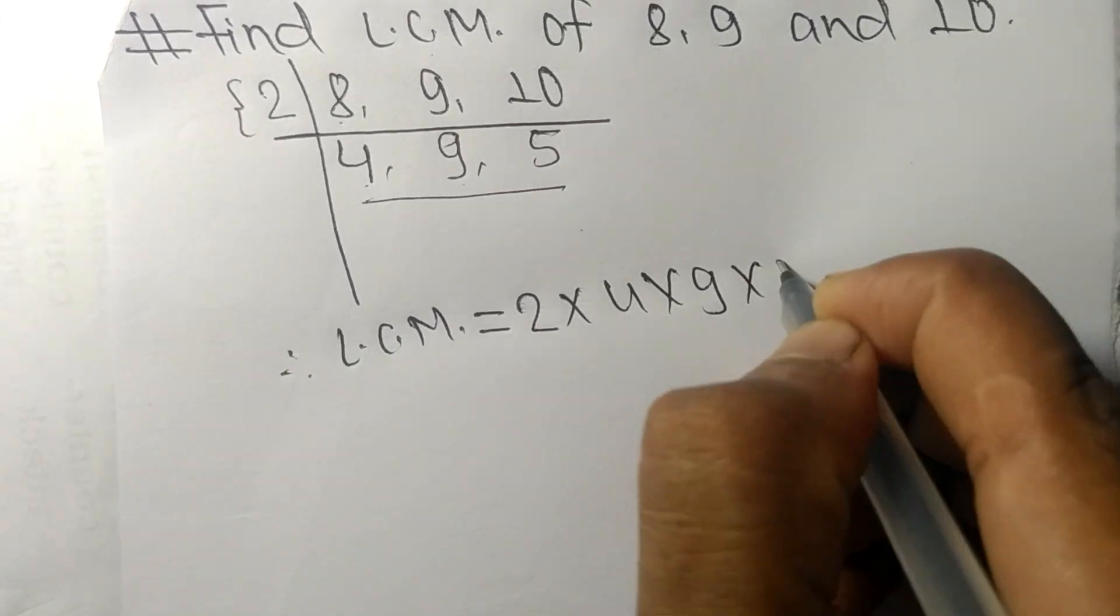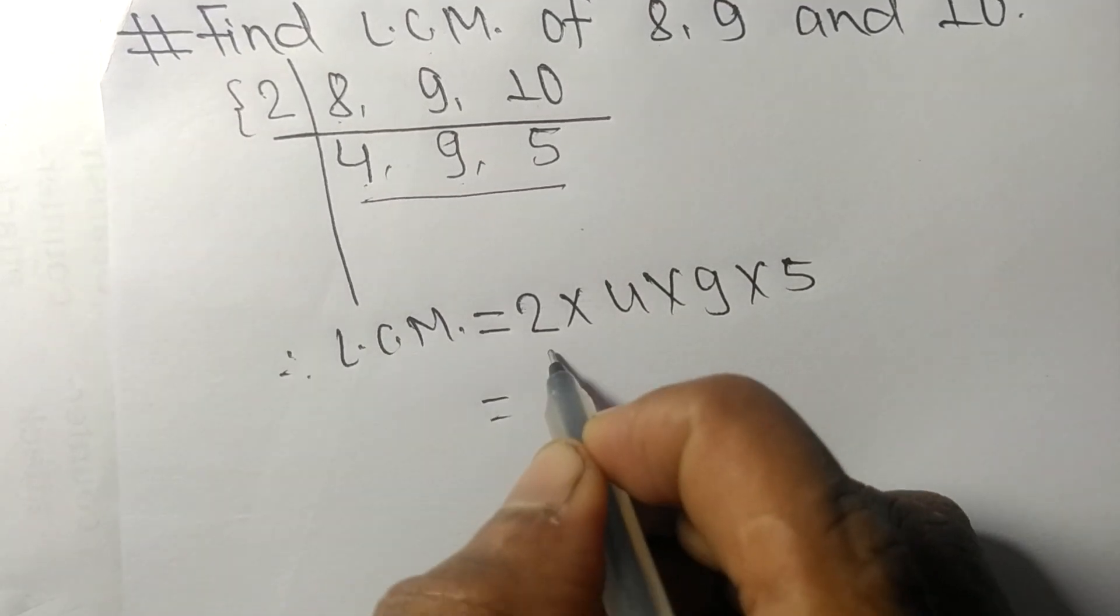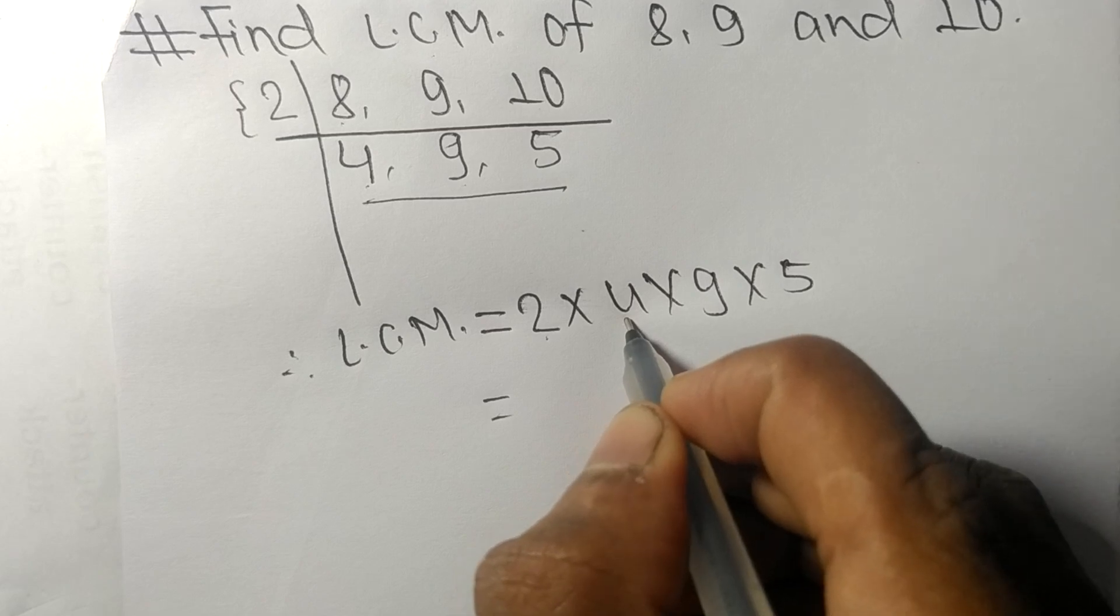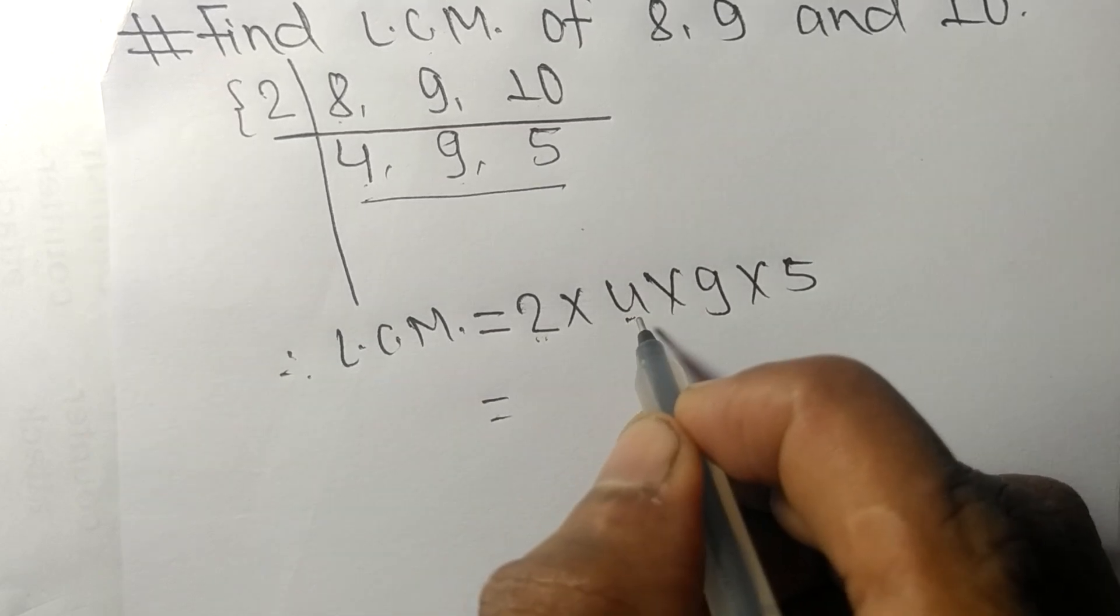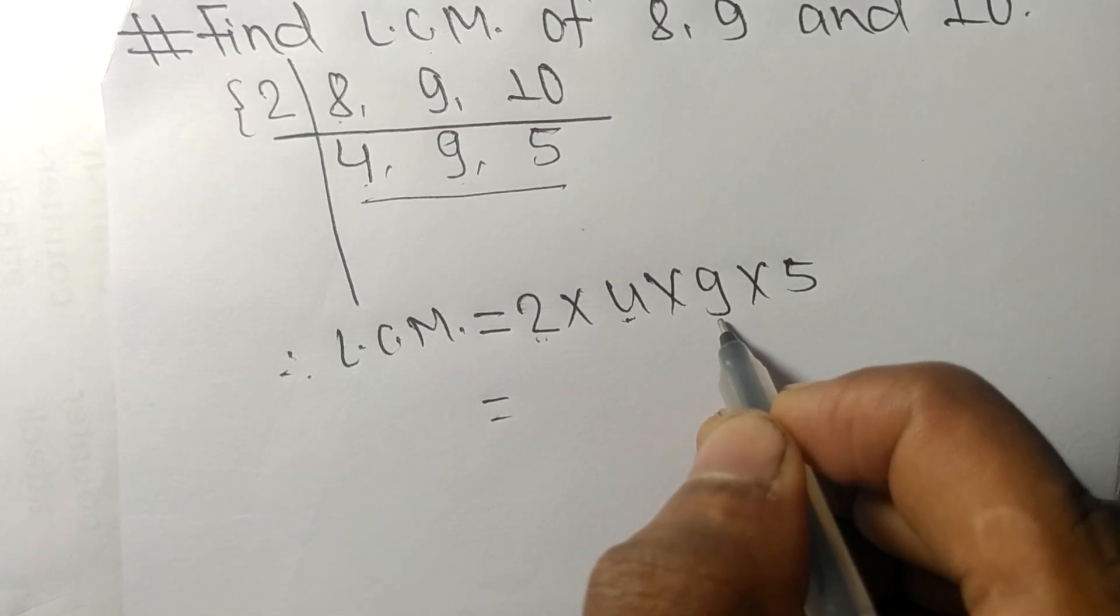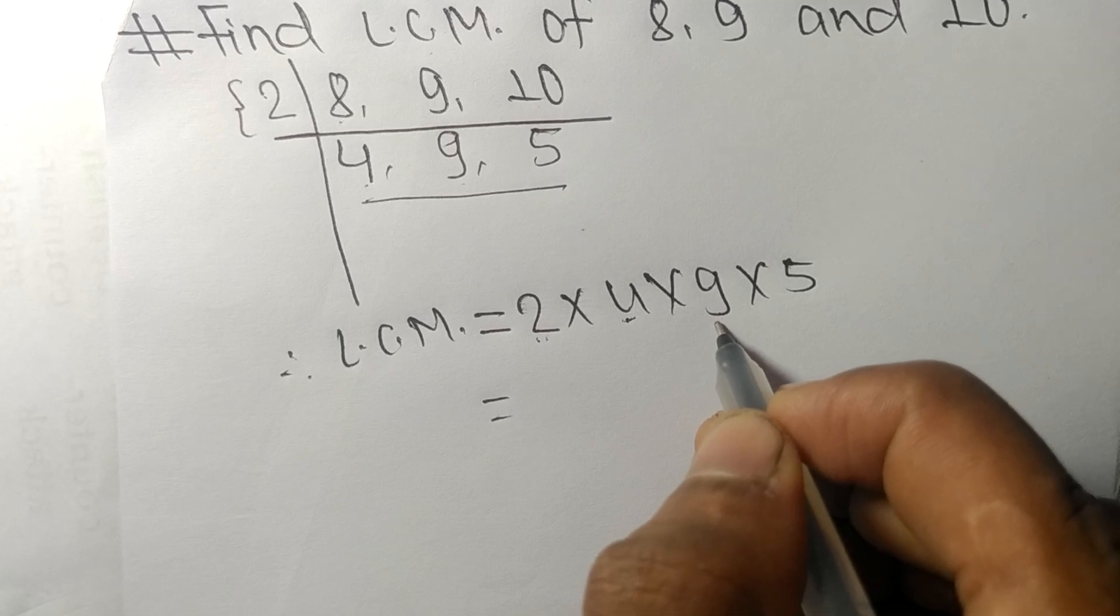So 2 times 4 means 8, 8 times 9 means 72, 72 times 5 means it is 360.